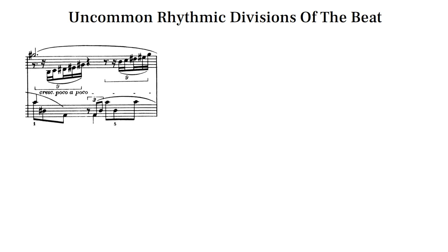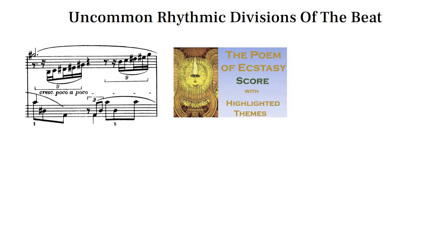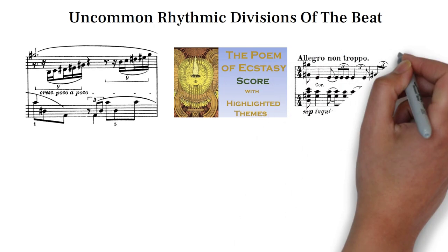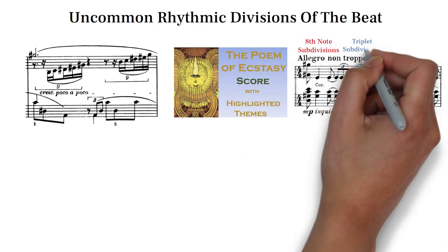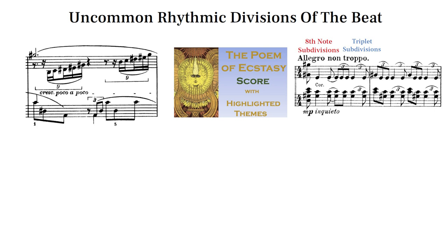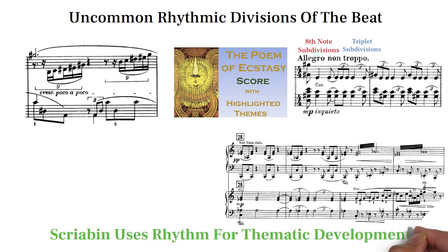One of my favorite examples is the rhythmic motif in The Poem of Ecstasy. The rhythm begins seemingly as straight eighth notes accenting the upbeats, until filled in by triplets. He develops this motif throughout the work by cutting it into pieces and augmenting it into longer rhythmic units.